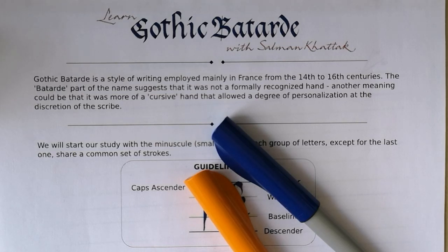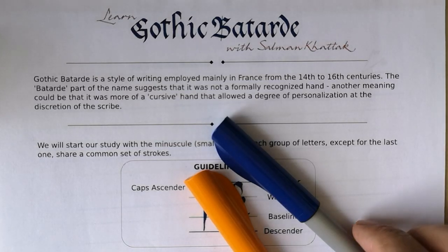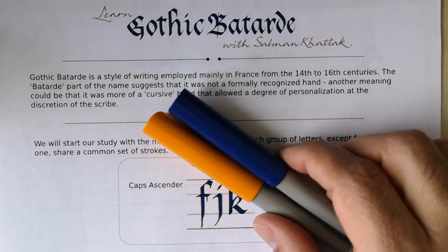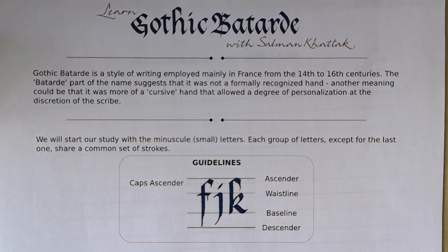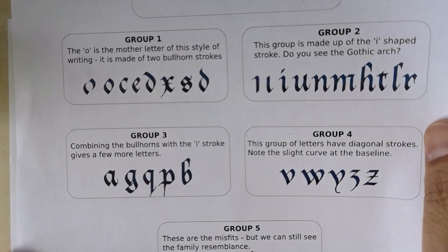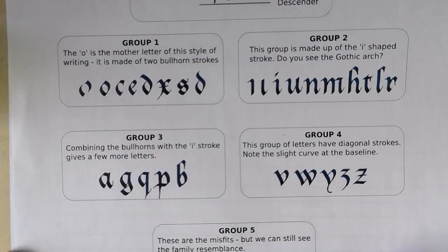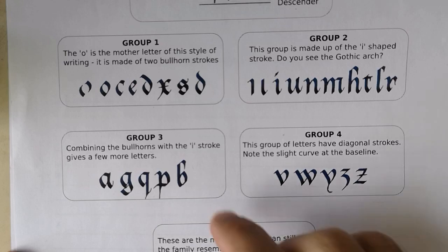Gothic Batard historically is written with a bit of a slant. What we are going to be learning is written upright. If you've taken any classes with me you know I like to teach in groups of letters to establish the patterns that are present in the alphabet and it makes the learning a bit easier and understanding the structure is a bit simpler.